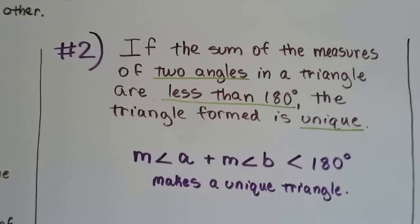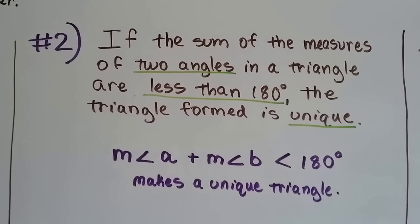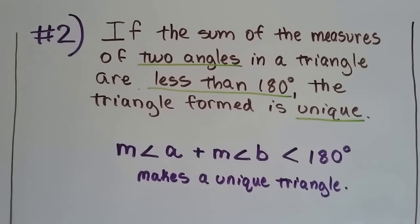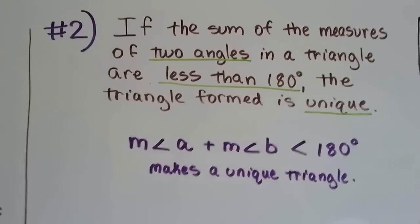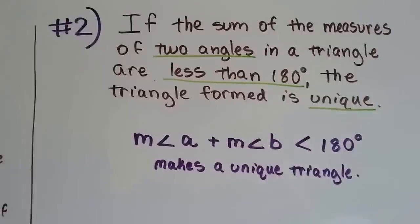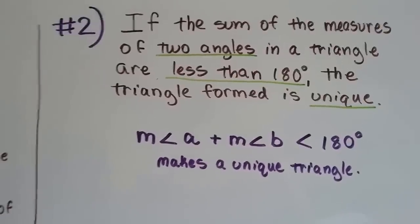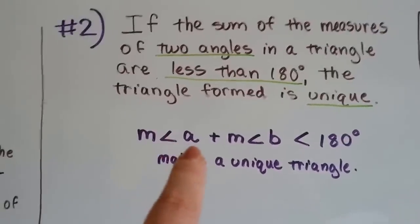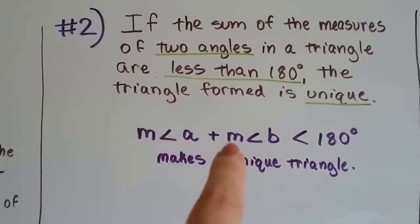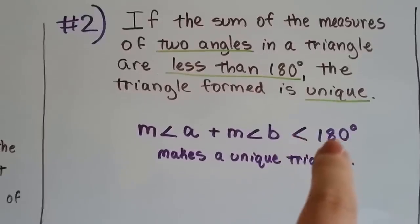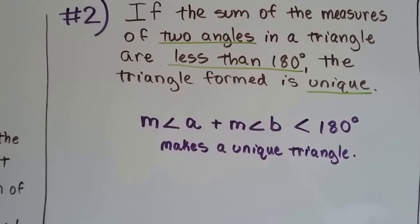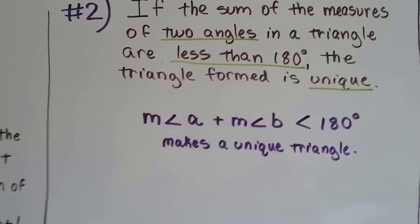The second way to tell if a triangle is unique: if the sum of the measures of two angles is less than 180 degrees, then the triangle formed is unique. So if the measure of angle A plus the measure of angle B is still smaller than 180 degrees, you're going to have a unique triangle.